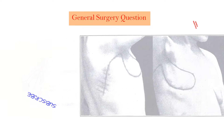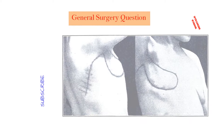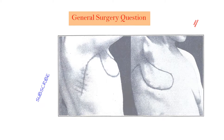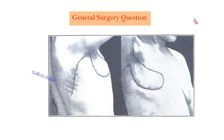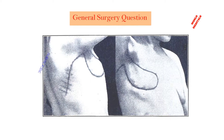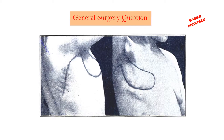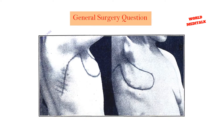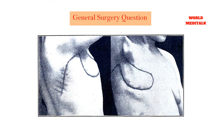Staphylococcus saprophyticus is also a catalase-positive and coagulase-negative organism. It can be differentiated from Staphylococcus epidermidis by the Novobiocin sensitivity test. As this organism is part of normal flora, it can contaminate blood samples collected for blood culture. These infections can be prevented by proper hand washing and removing catheters early.